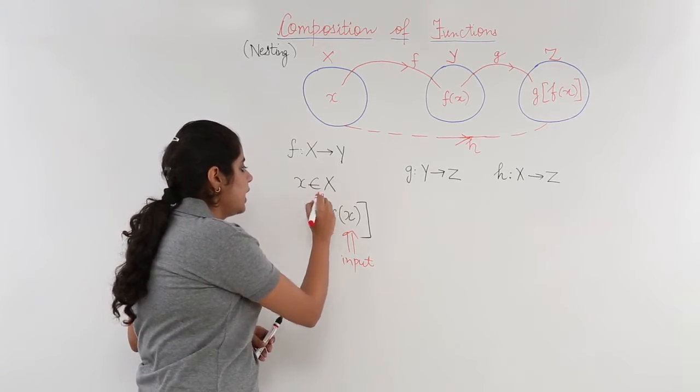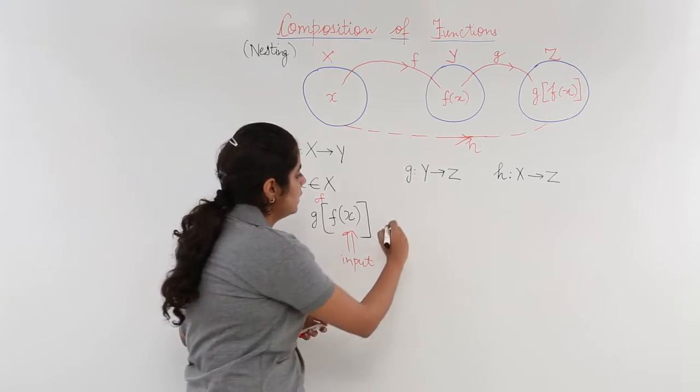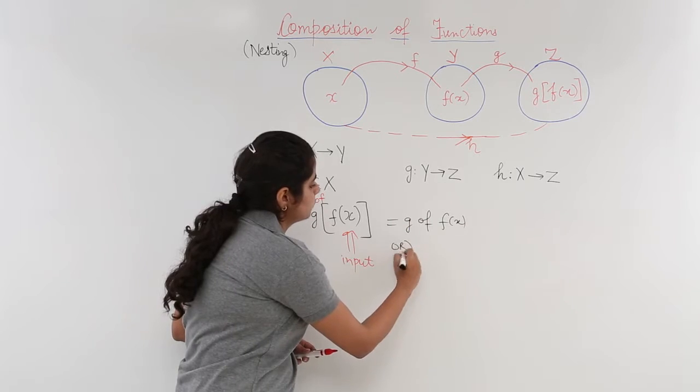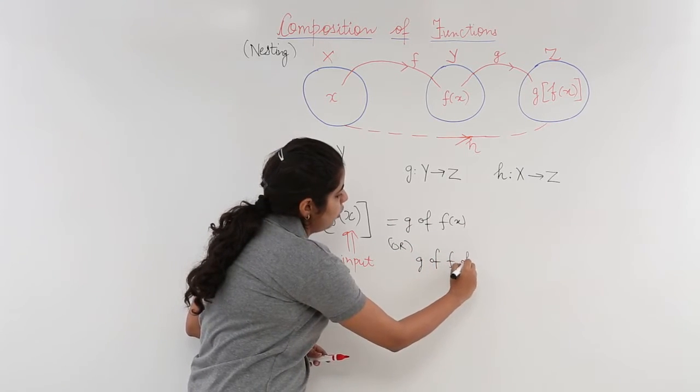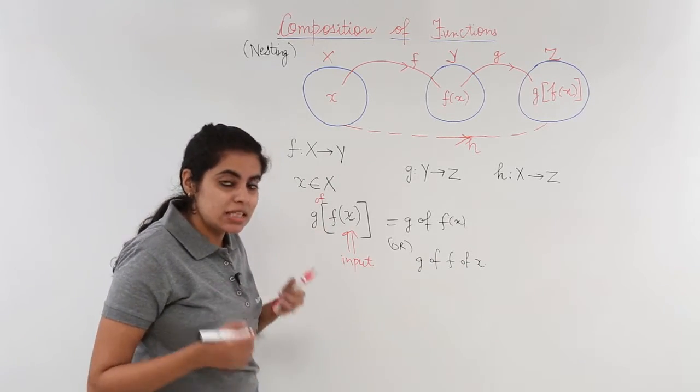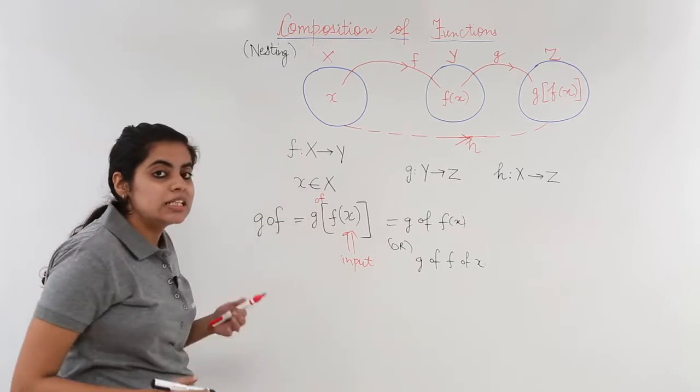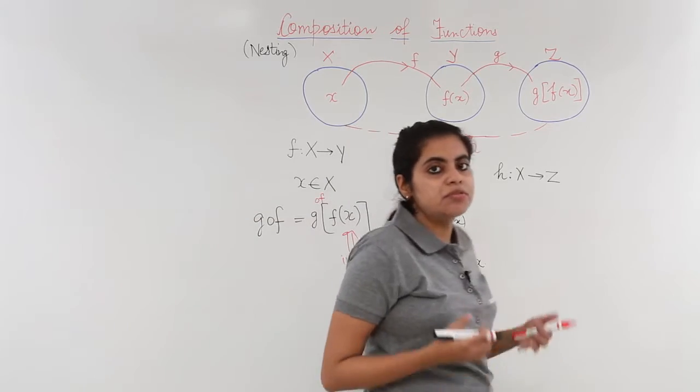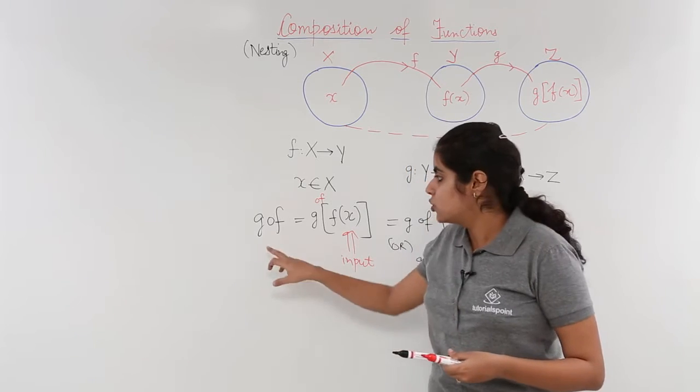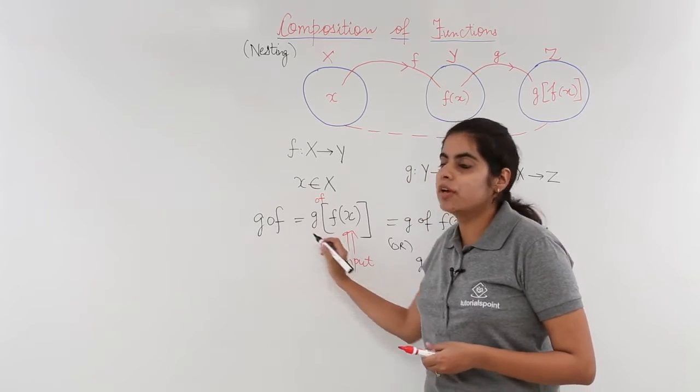You feed this as input to a g function to obtain g of f(x). This bracket is read as g of f(x) or g of f(x) or g of f(x). Now this g of f(x) is sometimes also spoken as g∘f, g∘f, f∘g. These things would be more and more visible in the questions. g∘f simply means what?